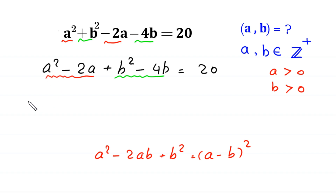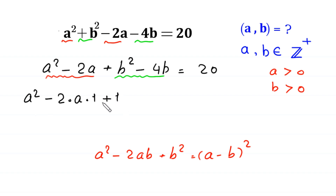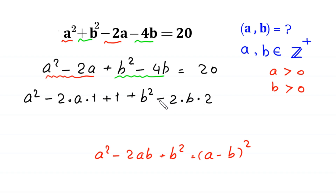So we write a squared. This negative 2a can be written as minus 2 times a times 1, so to make this a perfect square we add 1 to the expression. Then we write b squared. This negative 4b can be written as negative 2 times b times 2, meaning to make this a perfect square we have to add 2 squared, which is 4, to the expression. Now this is a perfect square, equal to 20.